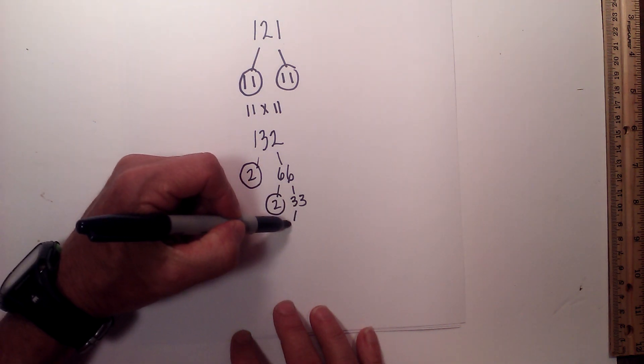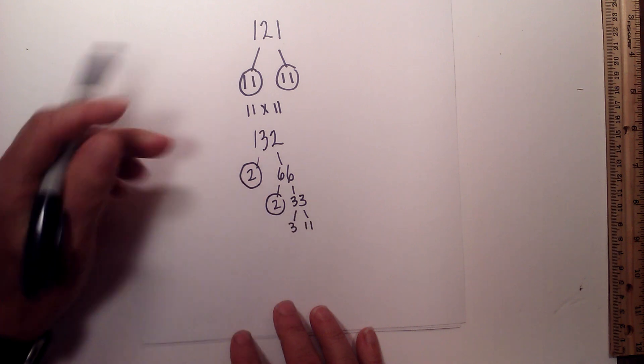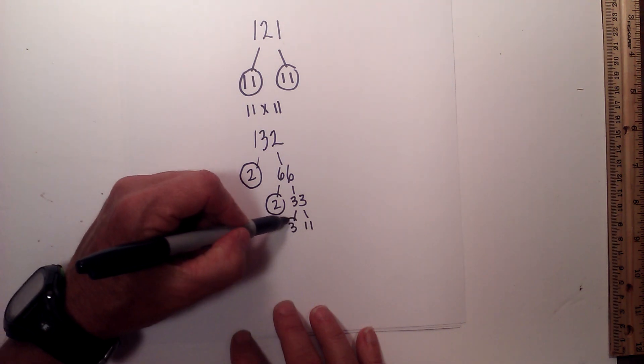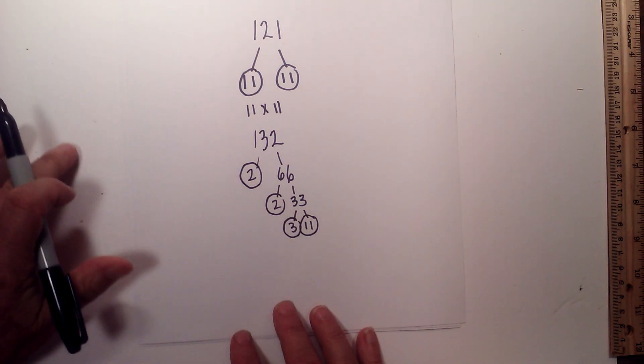And then 3 times 11 equals 33. Circle both of them because they are prime.